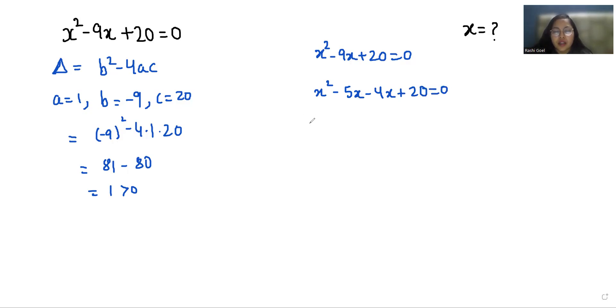Now I can take x as common, so x minus 5, and if I take negative 4 as common, so x minus 5 equals 0. So if I take x minus 5 as common, x minus 4 times x minus 5 equals 0. So first, x minus 4 equals 0 gives us x equals 4, and x minus 5 equals 0 gives us x equals 5. These are the two values of x.